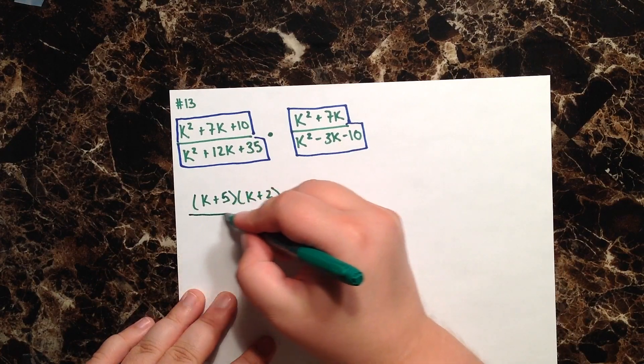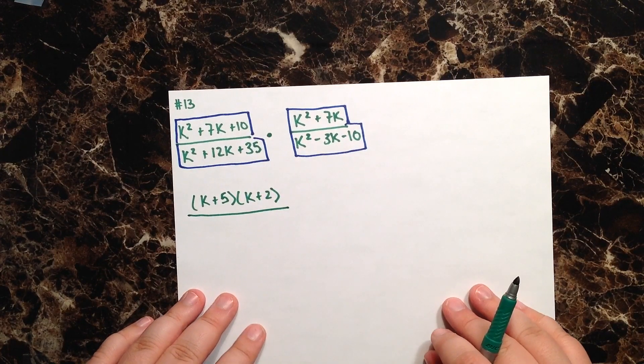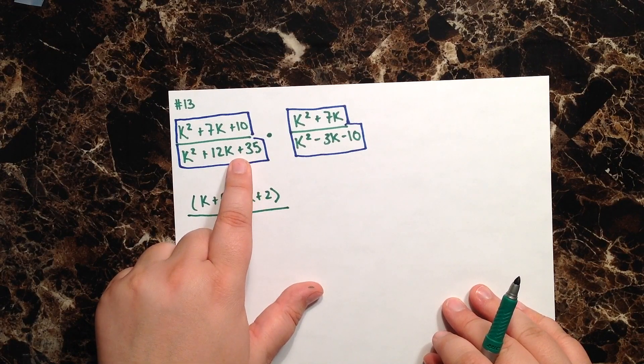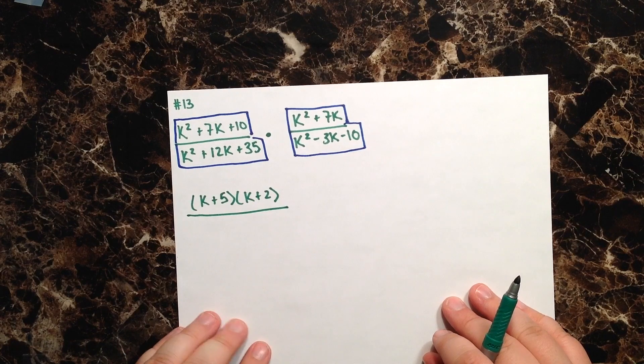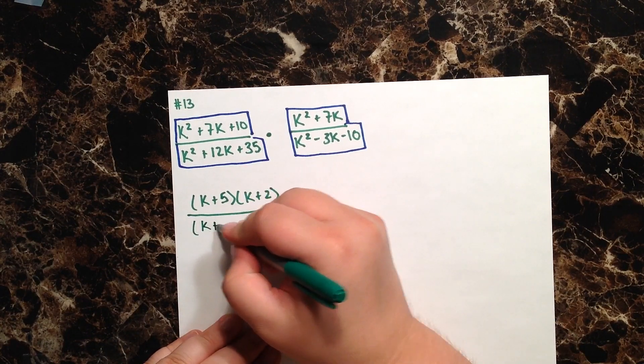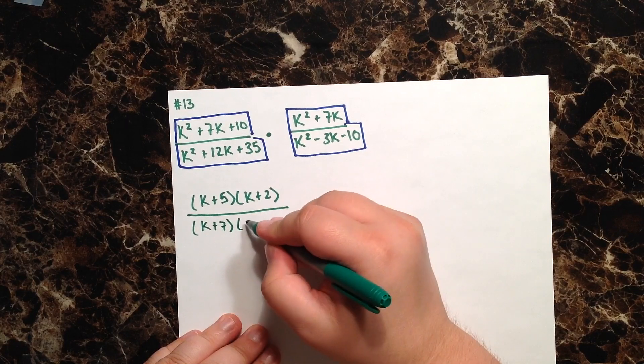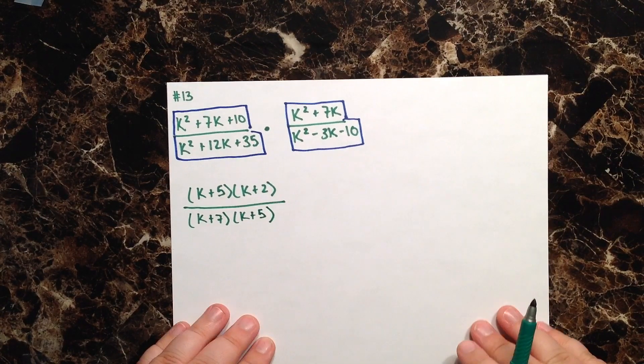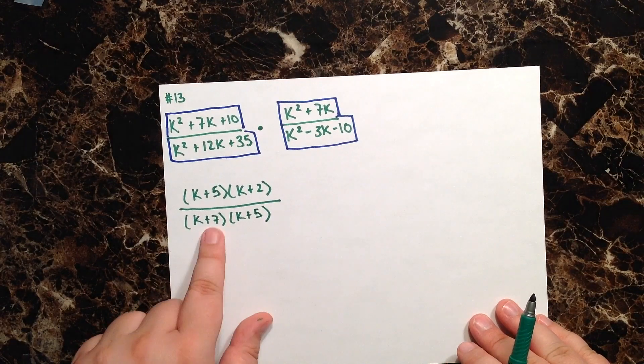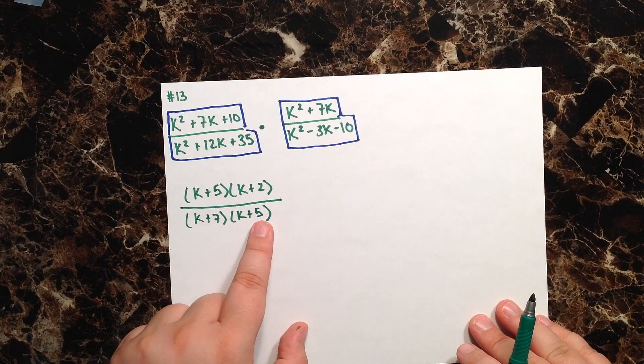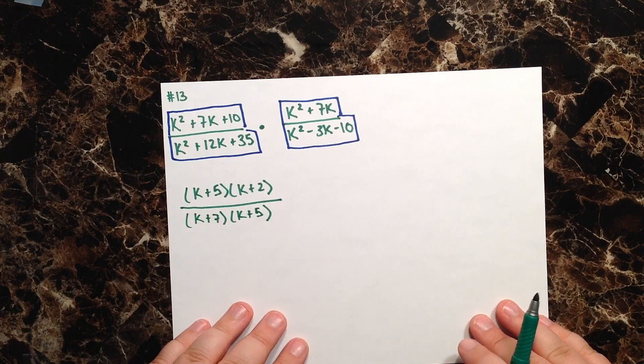In my denominator, I'm going to be looking for factors of 35 that add to give me a positive 12. So that's going to be k plus 7 and then k plus 5. 7 plus 5 is 12, 7 times 5 is 35, so that checks out.